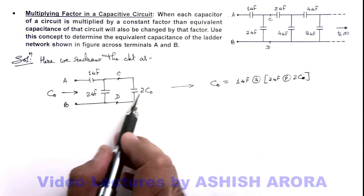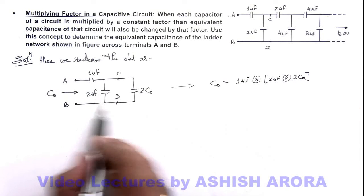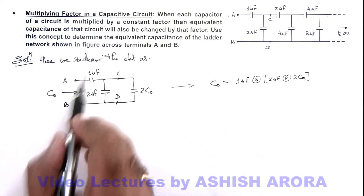Because here 2C_not and 2 microfarad are in parallel and this group is connected in series with 1 microfarad.